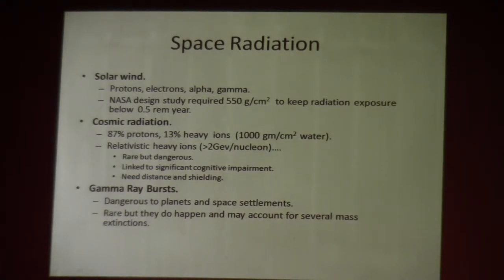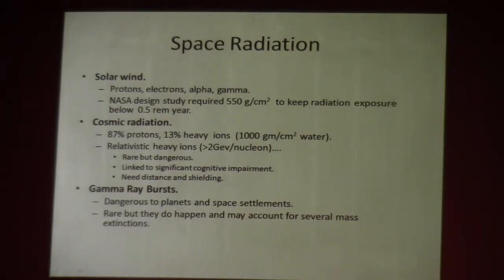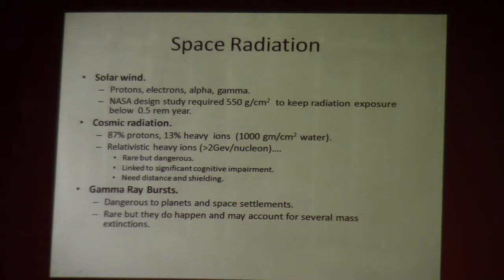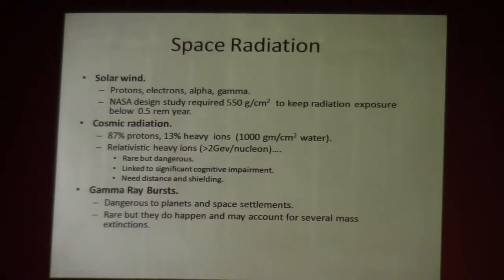Studies looking at mice show that if one of these particles runs through the brain, it can leave tens of thousands of nerve cells dead behind it, leading to significant cognitive failures. Shielding from this kind of radiation is something new to us — it's probably going to involve heavy shielding and distance. We're protected on Earth for the most part because of our atmosphere, which provides a lot of distance and a lot of mass. Gamma ray bursts are expected to have accounted for several extinction events here on Earth. Space settlements and space travel have some issues with radiation exposure that I'm not sure we've fully dealt with.